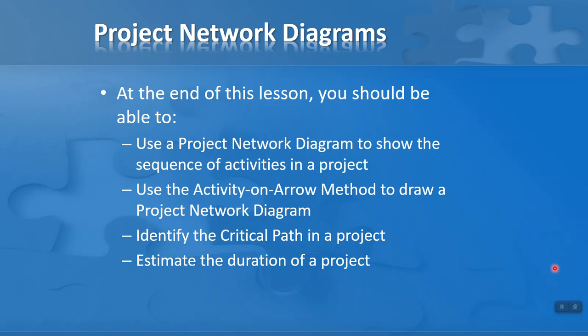Our objectives for this lesson are as follows. At the end of the lesson, we should be able to: first, use a project network diagram to show the sequence of activities in a project; use the activity-on-arrow method to draw a project network diagram; use a project network diagram to identify the path in a project; and finally, use this type of diagram to estimate the duration of a project.